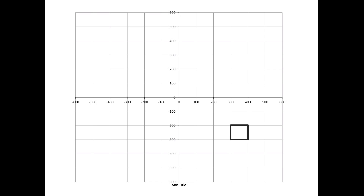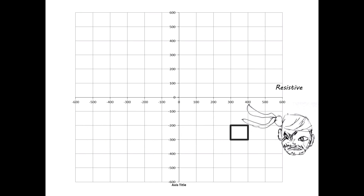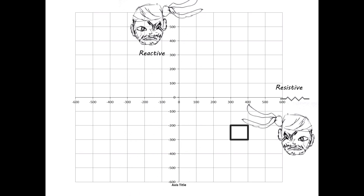Along the horizontal axis of this chart, we'll be measuring resistive impedance — resistive because it's caused by resistors. Along the vertical axis of the chart, we'll be measuring reactive impedance. A positive reactive impedance is caused by inductors, rising up the vertical axis like a mainsail rising up the mast. A negative impedance is caused by capacitors, sinking down, down into Davy Jones' locker.